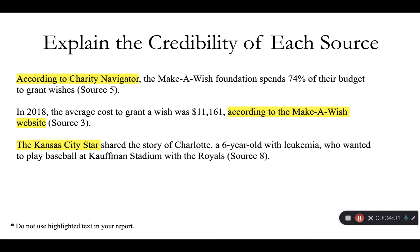Explain the credibility of each source the first time you use it in the report. This way the reader does not have to rely on your reference list to check the source credibility. You are required to have at least eight sources, and you should have eight sentences similar to these examples where you introduce the source credibility. The second time you use a source in your report, just use the source number at the end of the sentence. Please refer to the additional examples in the using evidence effectively lecture. You are welcome to use more than the required eight sources if this helps your persuasive argument. Note that highlighted text is used here to show the credibility statements — you should not use highlighted text in your report.